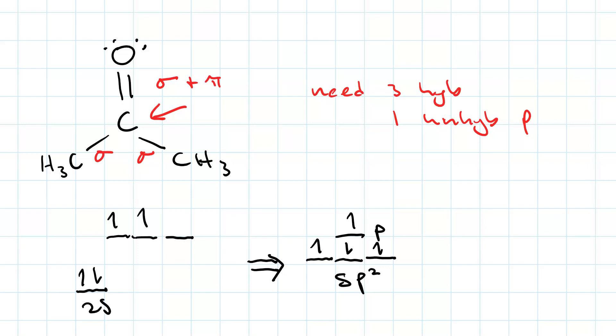Now, we're capable of making three sigma bonds from the three sp2 hybrid orbitals, and we're capable of making one pi orbital, or one pi bond from the p orbital. And that's exactly what the carbon has.